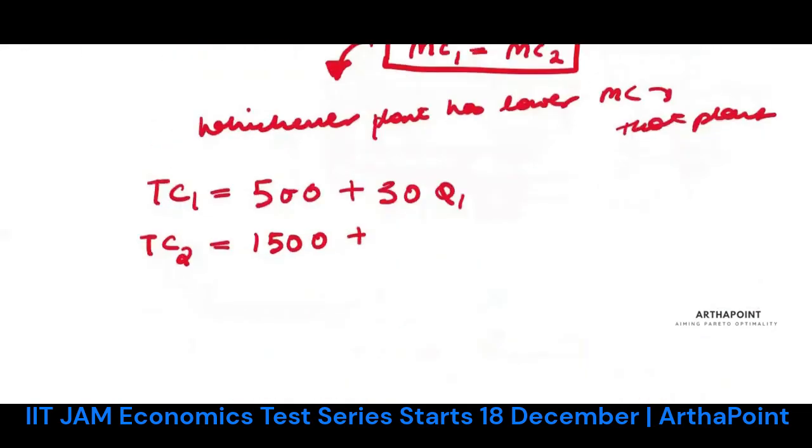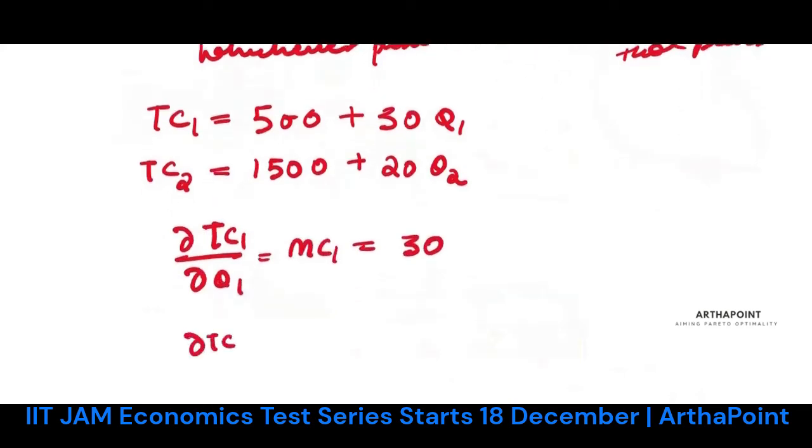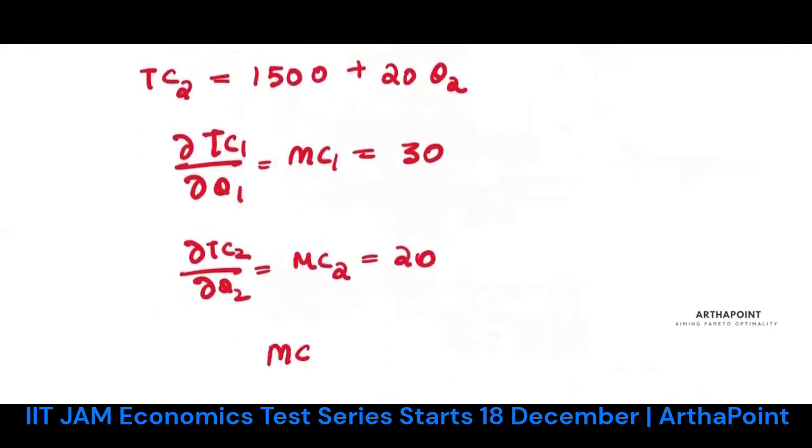Del TC1 by del Q1, this is the marginal cost of plant 1, which is 30. Del TC2 by del Q2 is the marginal cost of plant 2, which is 20.